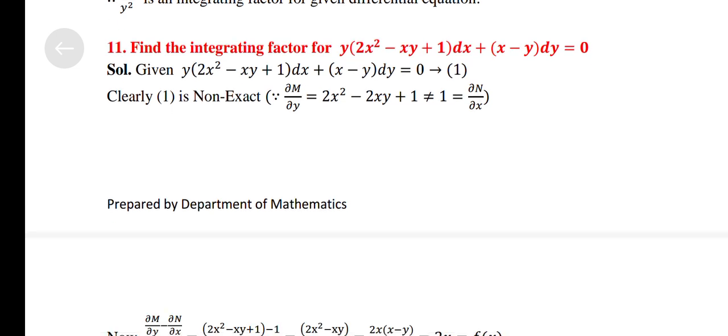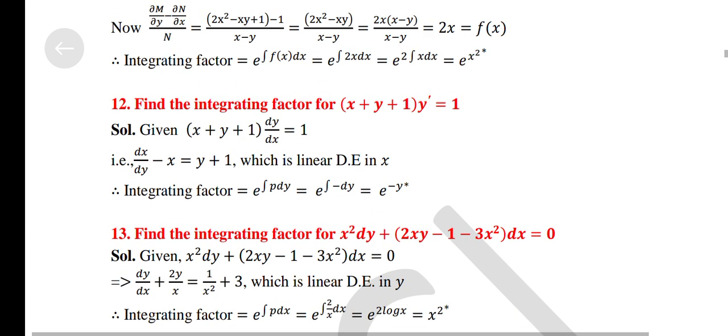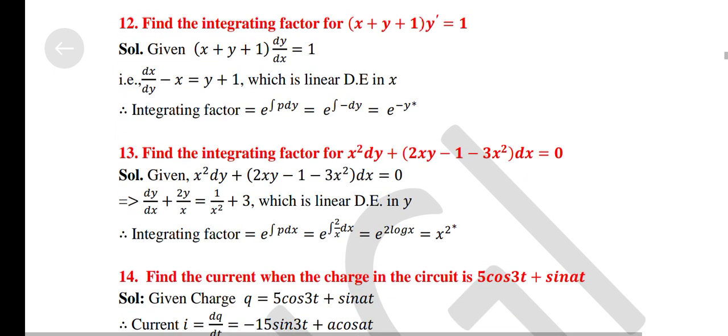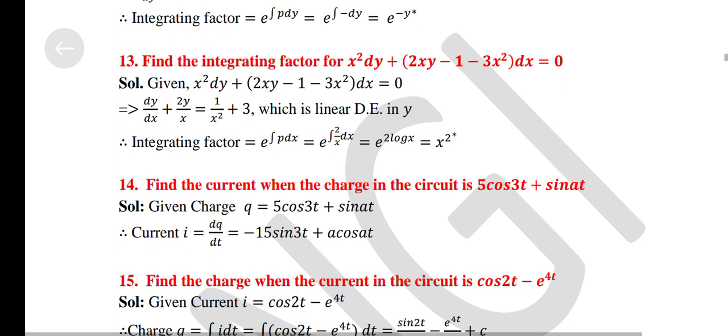Find the integrating factor for: y(2x² − xy + 1) dx + (x − y) dy = 0. Find the integrating factor for: (x + y + 1) e^y dy = 1. Find the integrating factor for: x² dy + (2x − 1 − 3x²) e^x dx = 0.